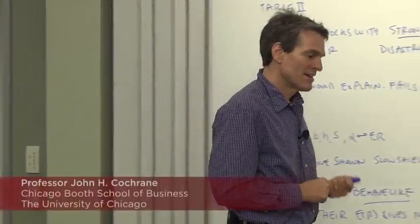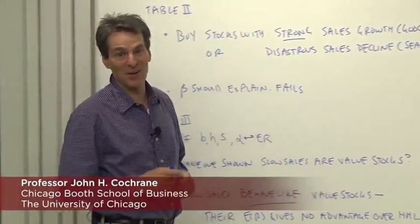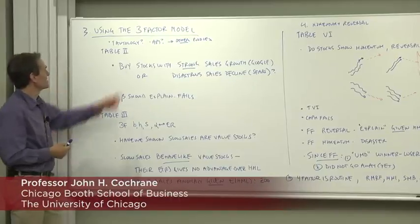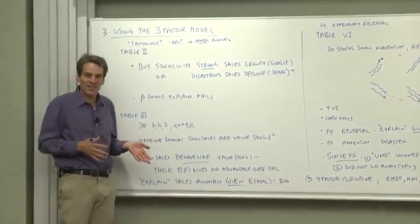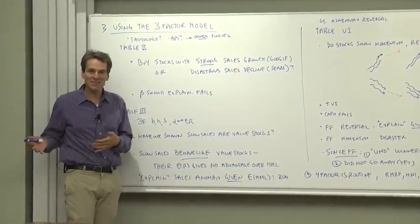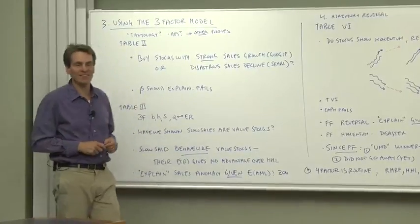Now, the evidence in Table 1 may still lead you wondering. It left me wondering and sputtering when I first saw it in a workshop. You may ask yourself, wait, isn't that kind of a tautology? 25 portfolios of size to book-to-market explained by three factors that are also size and book-to-market? No, it's not, but that takes a while to digest.